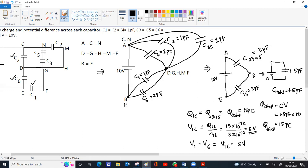Now, we can find V2345 also. V2345 will be Q2345 by C2345. That is 15 into 10 to the minus 12 divided by C2345. C2345 is 3 into 10 to the minus 12. This also will come as 5 volt. So, since these three are parallel, V4 will be same as V2, will be same as V35, that is equal to V2345, which is 5 volt.